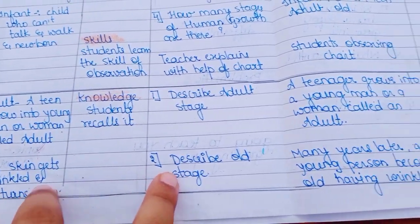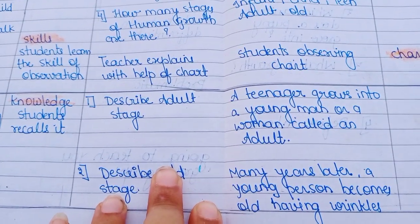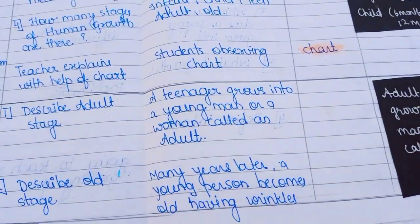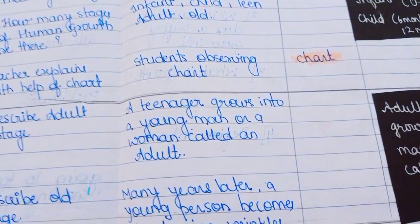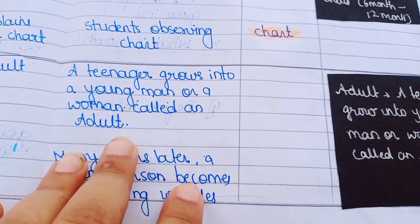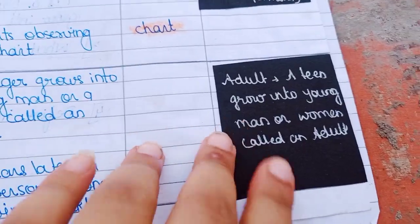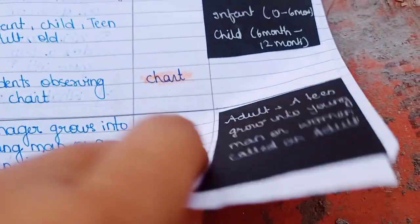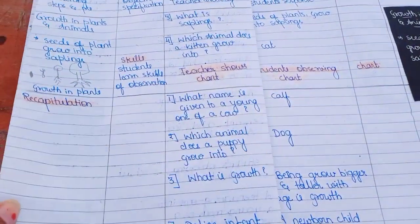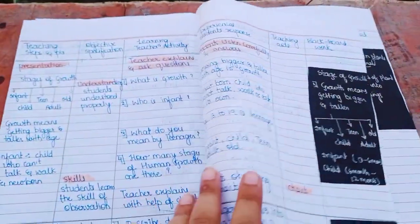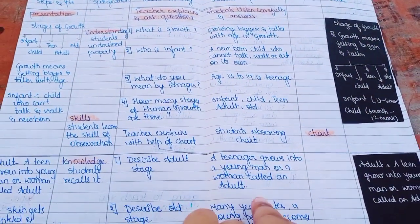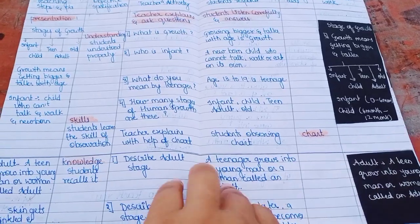I have explained 'adult' and 'old' here. For questions with that, again we can ask four to five questions. Here are the answers we expect from students. Now let me show you the overall view of how it should look.